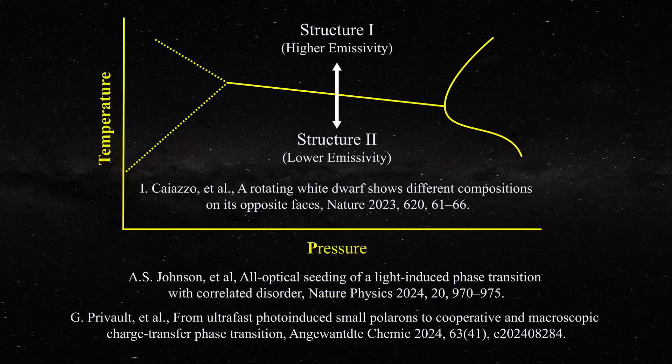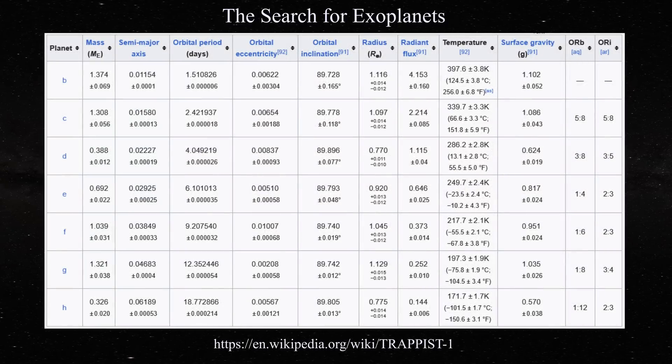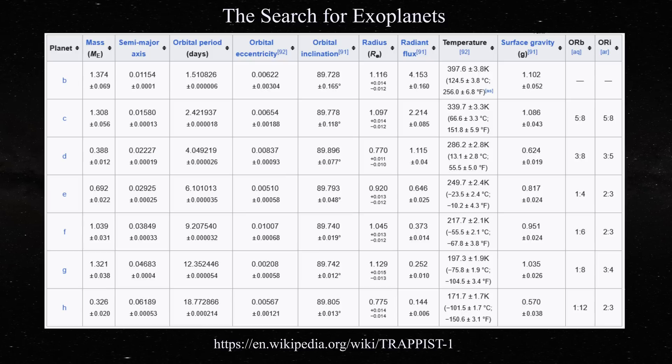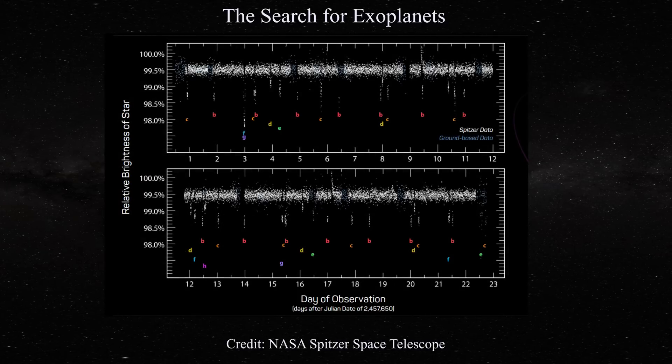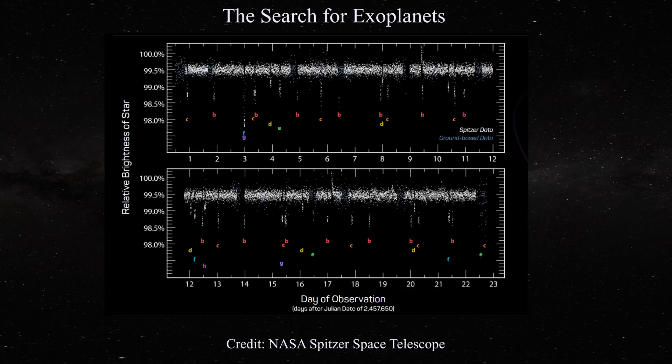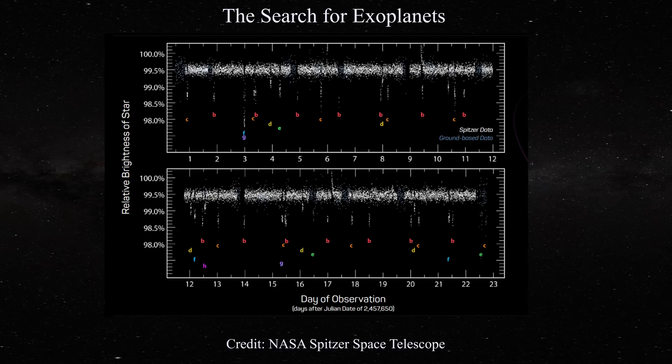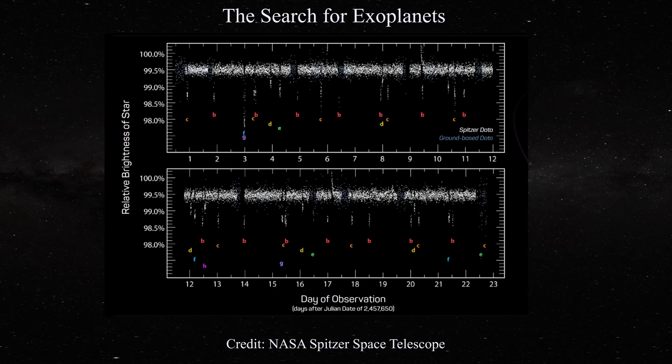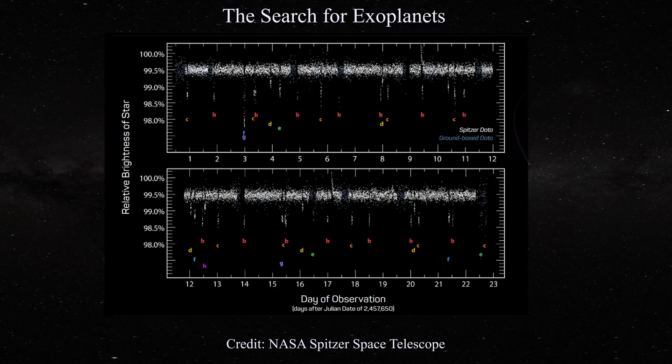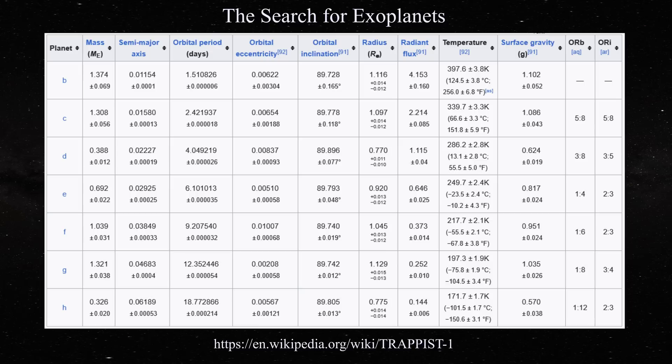For instance, the TRAPPIST-1 system is said to contain seven planets as seen in this table. However, all these planet characteristics were derived based on the idea that the light curve of the star itself was being affected only by the planets. Yet what if the entire variation in the stellar light curve was completely explained by oscillations within the phase diagram of the star that would have absolutely nothing to do with exoplanets and TRAPPIST-1 might not actually be home to any such objects. In any case, given the very short orbital period of all these supposed planets from 1.5 to 19 days, perhaps these ideas need to be reconsidered.